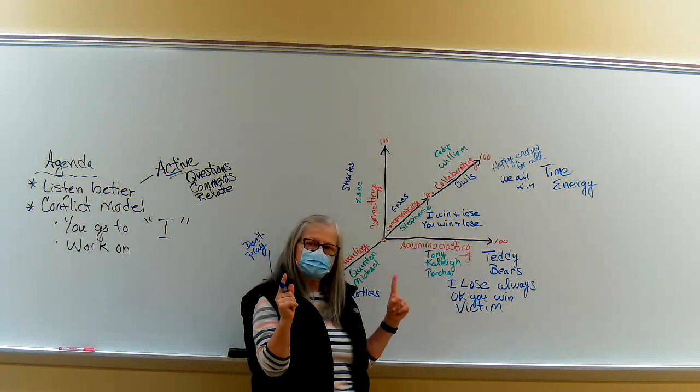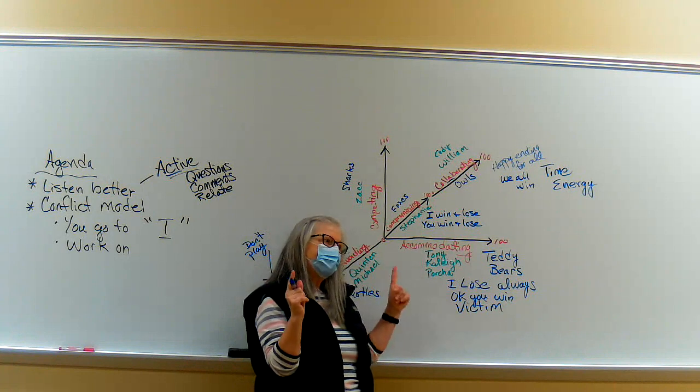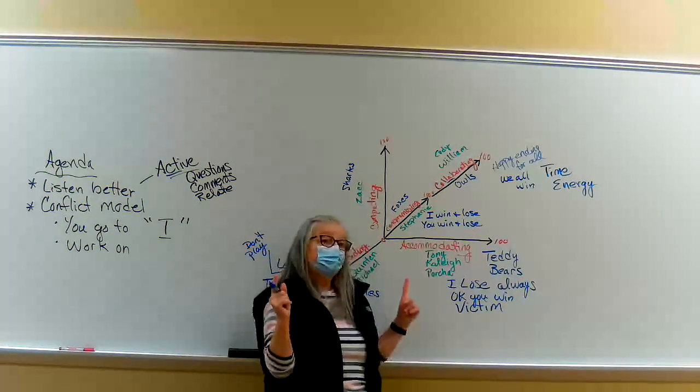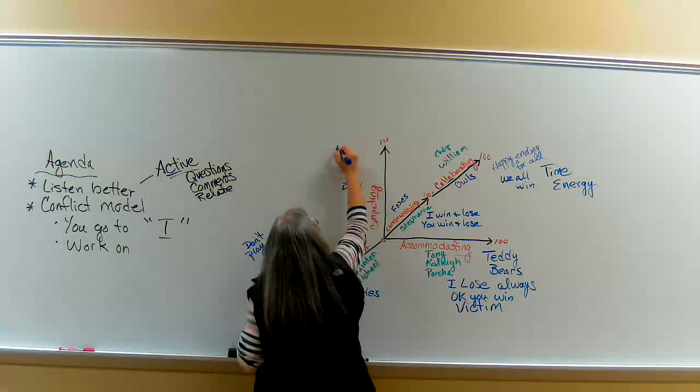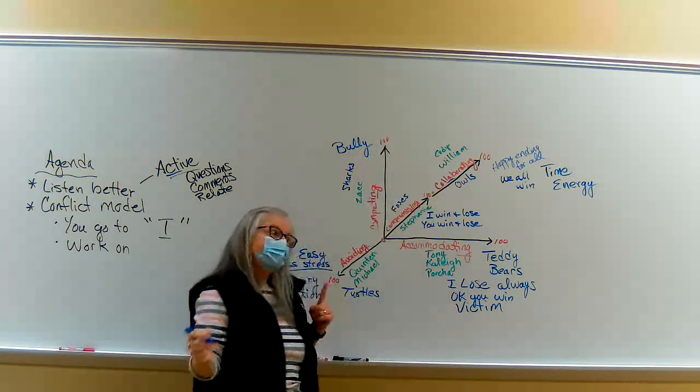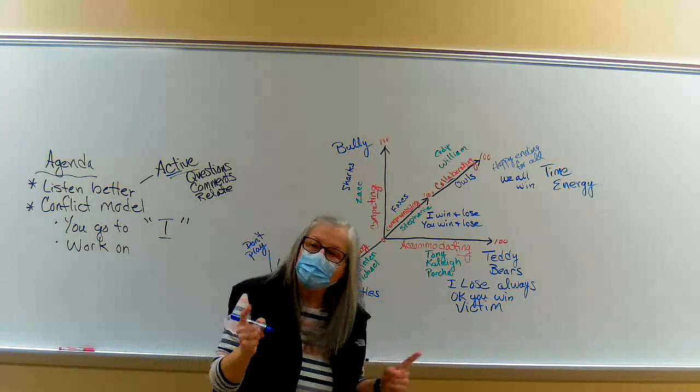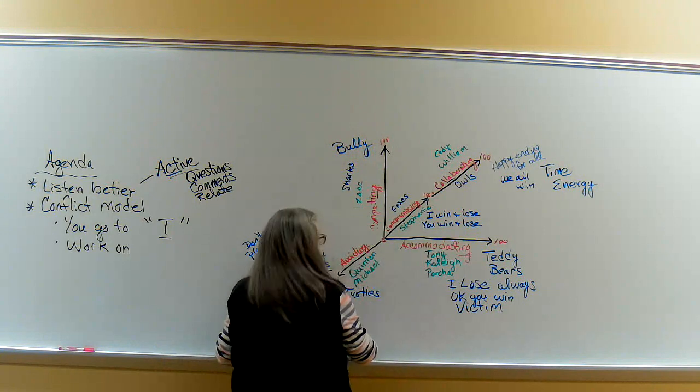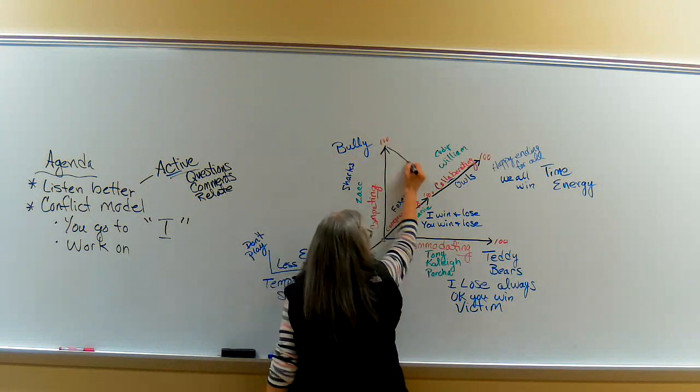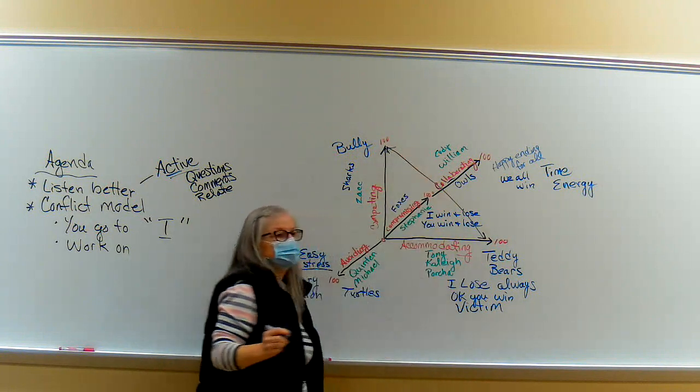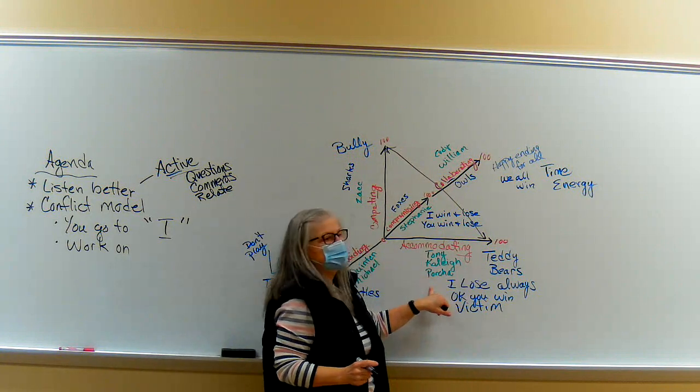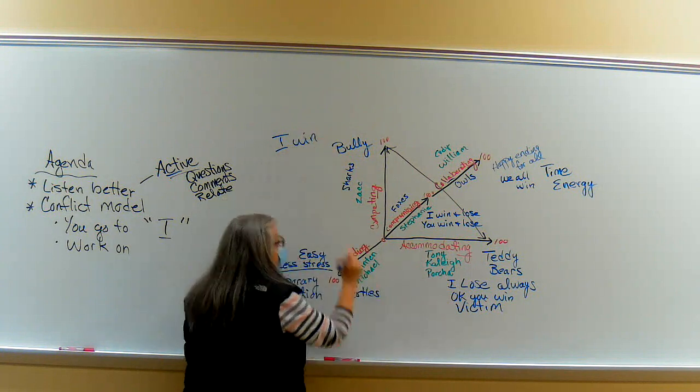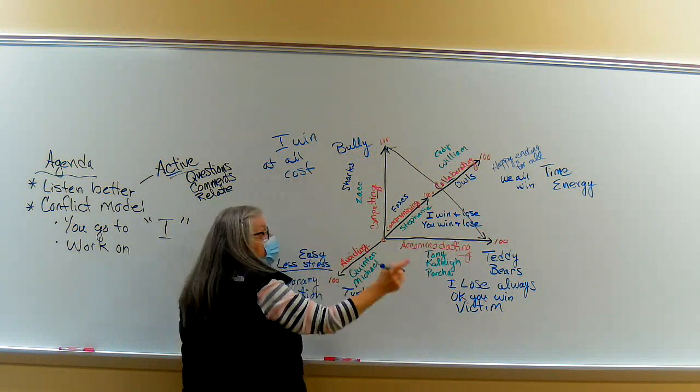In order for us to have victims, somebody is going to be the bully. You can't have a bully unless there's a victim. So this is when we look at transactional communication, you've got to have these two to function. Somebody is going to be a bully over these people. That bully is I win at all costs.